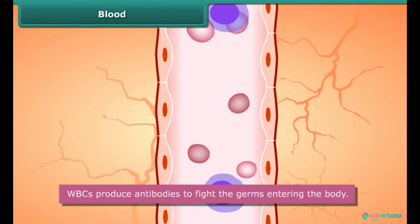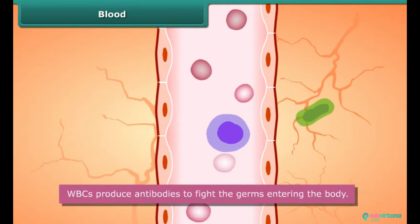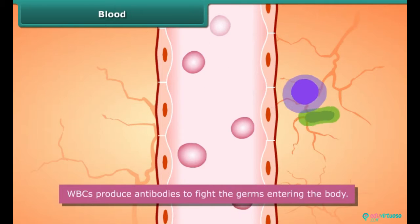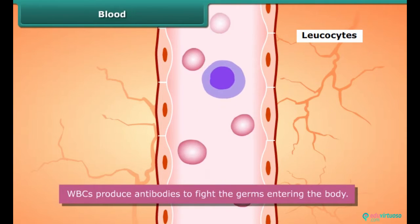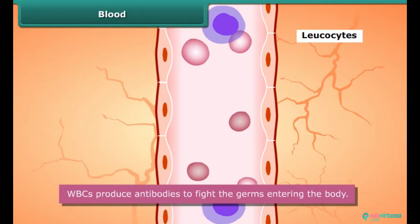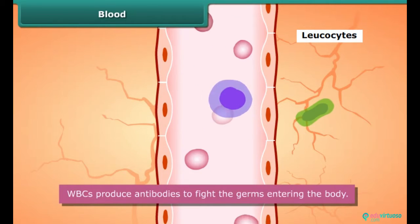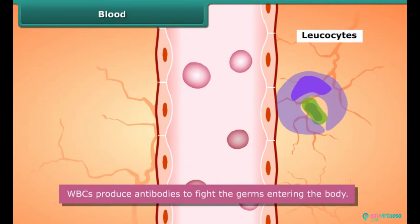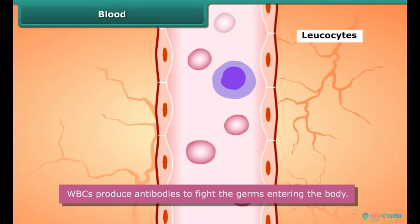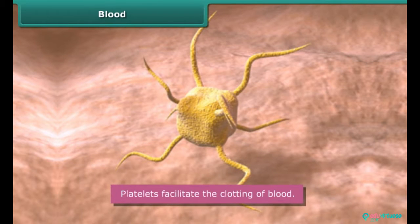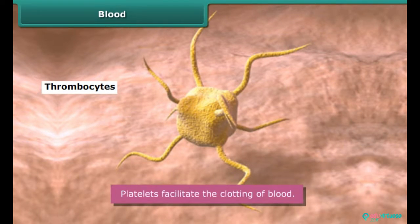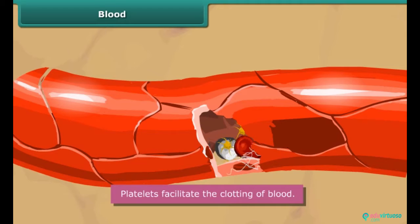Hemoglobin transports oxygen to different parts of the body. WBCs are also known as leukocytes. They come in many different shapes and produce antibodies to fight germs entering the body. Platelets, also known as thrombocytes, are oval in shape and facilitate the clotting of blood.